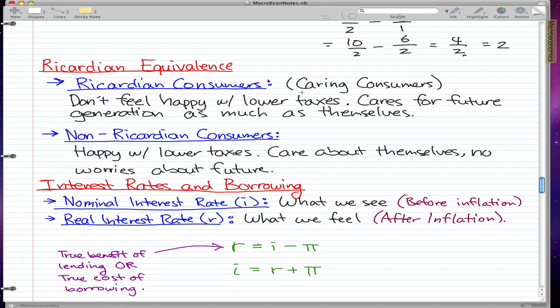Ricardian consumers are the caring consumers. They don't feel happy with lower taxes because they care for future generations as much as themselves. If they have higher taxes now, then later on in the future, their future generation don't have to pay as much debt as the current generation incurred.